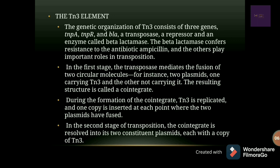In the first stage of TN3 transposition, the transposase mediates the fusion of two circular molecules. For example, consider two different plasmids — one carrying the TN3 element and one that does not. The resulting structure after integration is called a co-integrate.